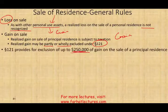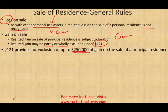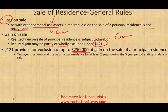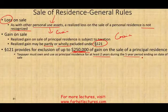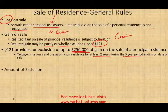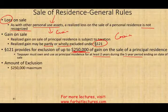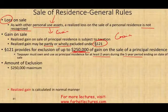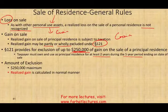Section 121 exclusion provides up to $250,000 of gain on the sale of a principal residence. You must own the home for at least two years in the past five years by the time of the sale. The amount of exclusion is $250,000 assuming you are single. If you are married filing jointly, you could exclude up to half a million.